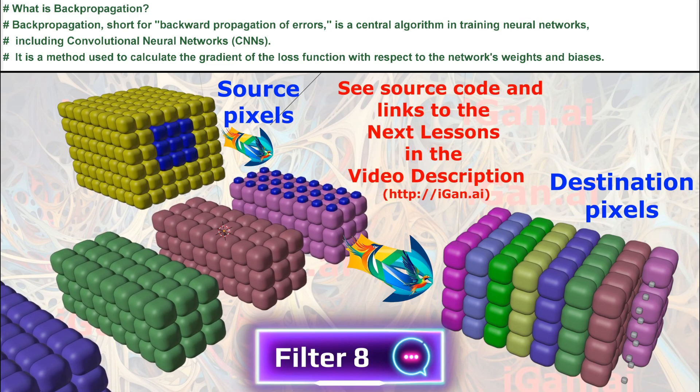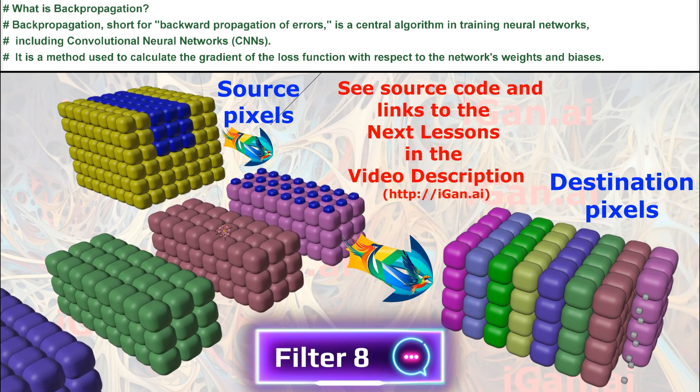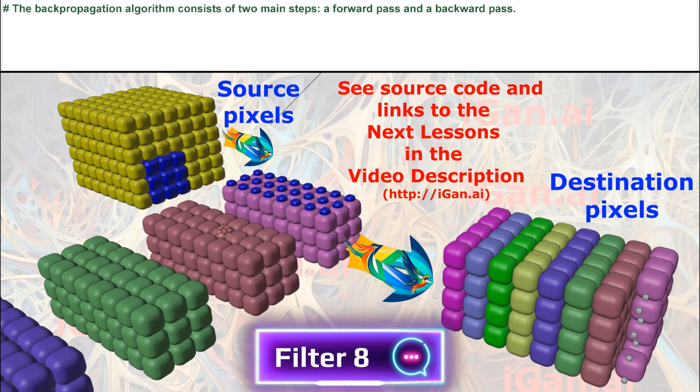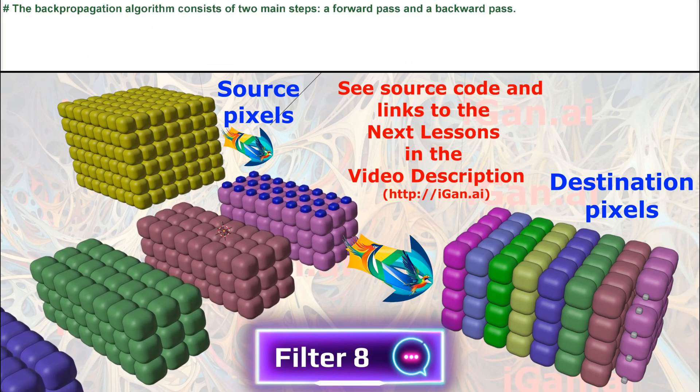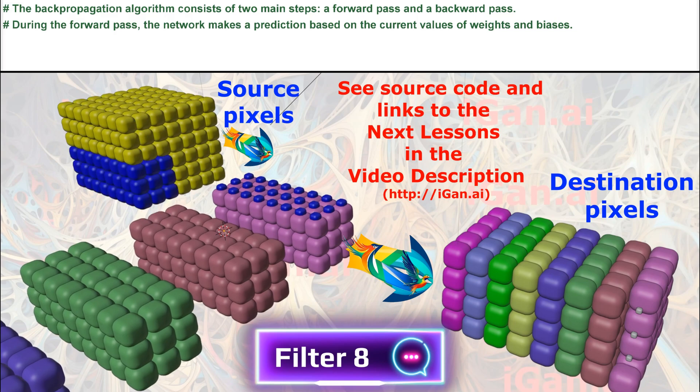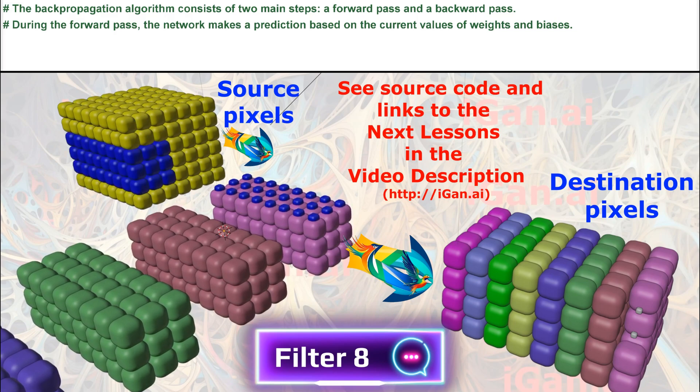It is a method used to calculate the gradient of the loss function with respect to the network's weights and biases. The backpropagation algorithm consists of two main steps: a forward pass and a backward pass.